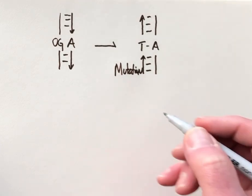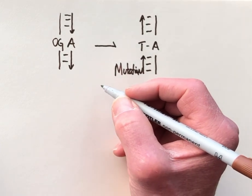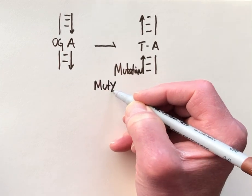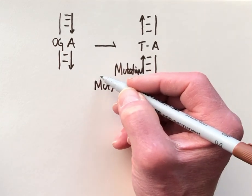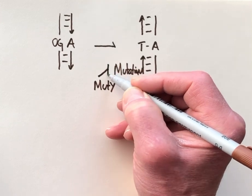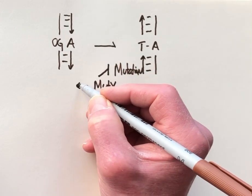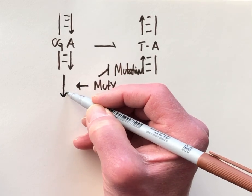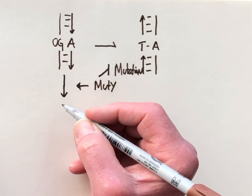And the role of MutY is to prevent these mutations from happening. So we'll put MutY here at the center. It is blocking the formation of these mutations by catalyzing the removal of the adenine from these OGA mispairs.